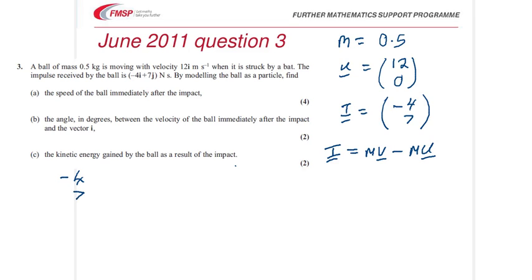-4, 7 equals 0.5V minus 0.5 times 12, 0.